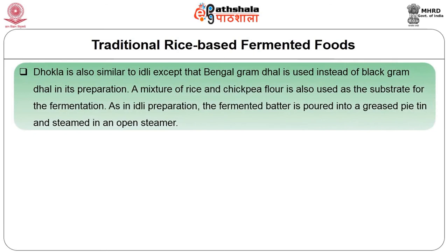Dhokla is also similar to Idli except that Bengal gram dal is used instead of black gram dal in its preparation. A mixture of rice and chickpea flour is also used as the substrate for the fermentation. As in Idli preparation, the fermented batter is poured into a greased pie tin and steamed in an open steamer.